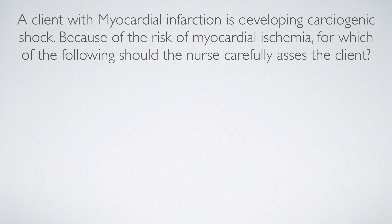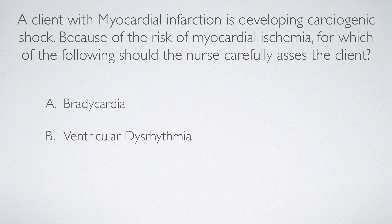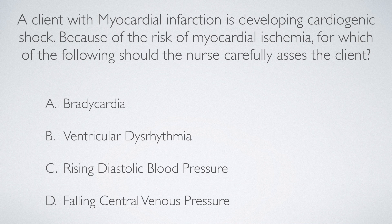In today's question, a client with myocardial infarction is developing cardiogenic shock. Because of the risk of myocardial ischemia, for which of the following should the nurse carefully assess the client? Option A, bradycardia. Option B, ventricular dysrhythmia. Option C, rising diastolic blood pressure. Option D, falling central venous pressure.